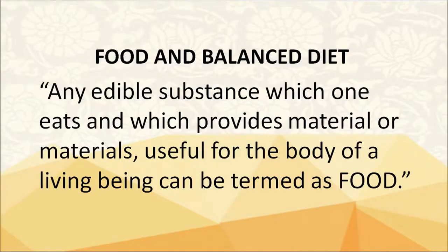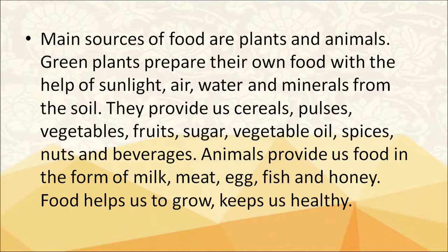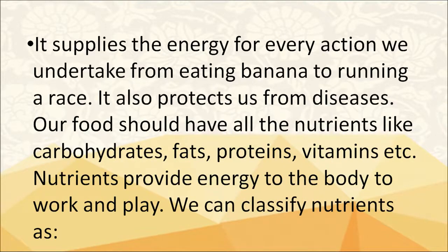What kind of food should one take and what is a balanced diet? Any edible substance which one eats and which provides material useful for the body of a living being can be termed as food. Main sources of food are plants and animals. Green plants prepare their own food with the help of sunlight, air, water and minerals from the soil, providing us cereals, pulses, vegetables, fruits, sugar, vegetable oil, spices, nuts and beverages. Animals provide us food in the form of milk, meat, eggs, fish and honey. Food helps us grow, keeps us healthy, supplies energy for every action, and also protects us from diseases. Our food should have all nutrients like carbohydrates, fats, proteins and vitamins.